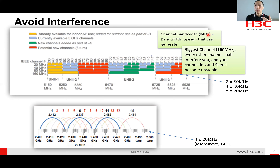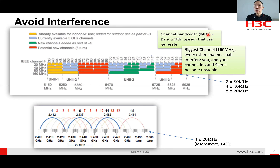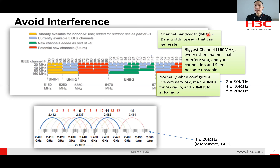A bigger channel gives bigger bandwidth, but at the same time it generates more interference. Imagine running a 160MHz channel — if other Wi-Fi access points or users nearby are using a 20MHz or 40MHz channel that sits inside that 160MHz range, the interference chance will be very high. Once interference happens, users complain about unstable connections and slow speeds. So normally in 5GHz we use a maximum 40MHz channel, and in 2.4GHz we use only a 20MHz channel.